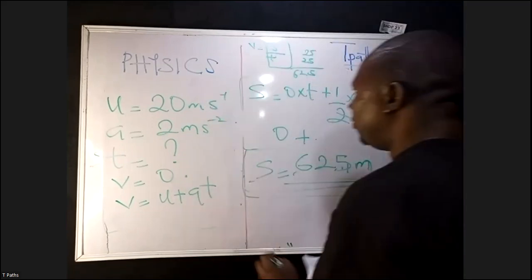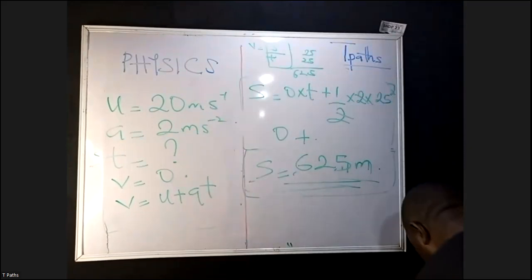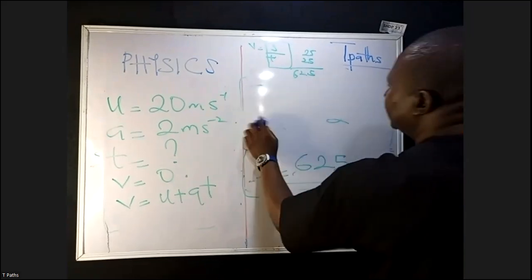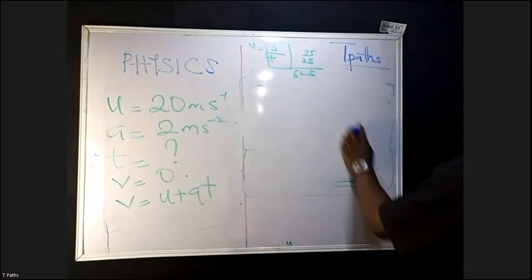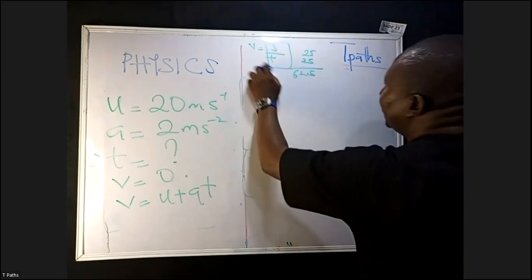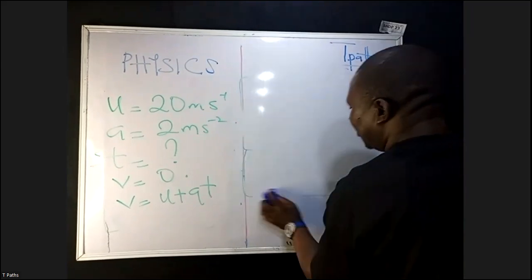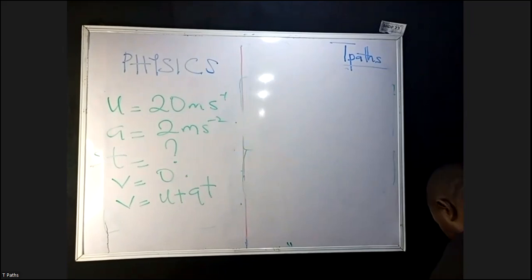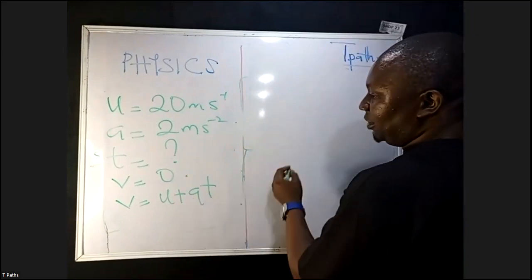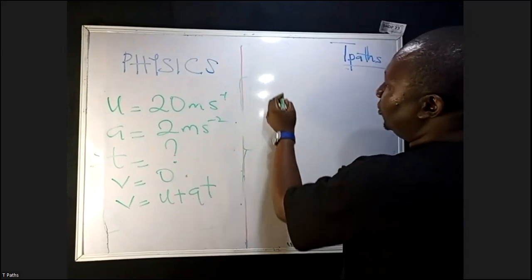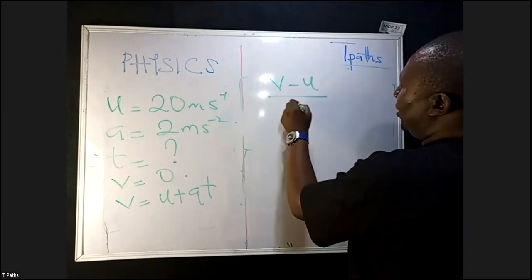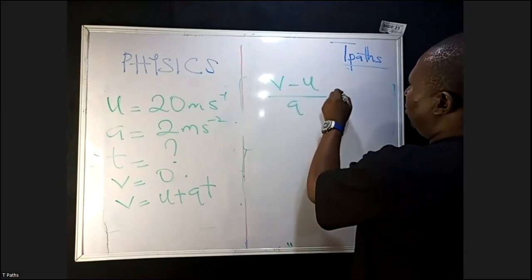Since we are looking for T, make T the subject formula. You'll have T = (V − U) / A.